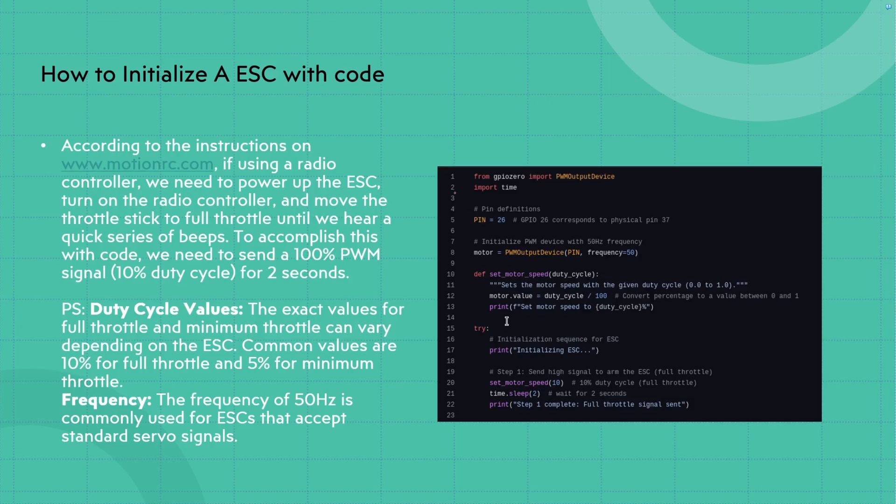And you can see a little snippet of code right here. You can actually see that we're just going to import PWM output device from GPIO 0. We're using GPIO 0 because we're actually on a Raspberry Pi 5 today instead of a Raspberry Pi 4. And down here, we're also going to have to import time. We're actually going to be using pin 26 today.